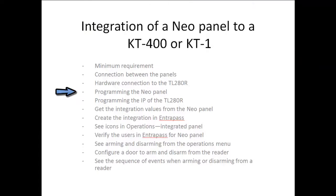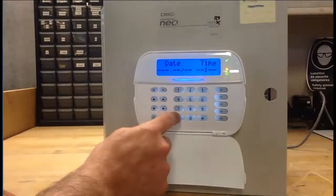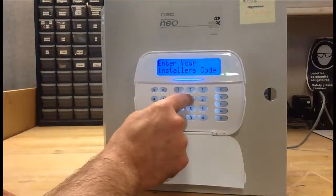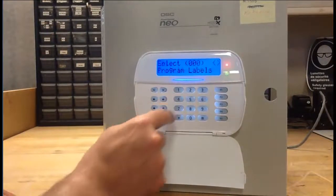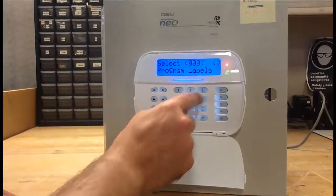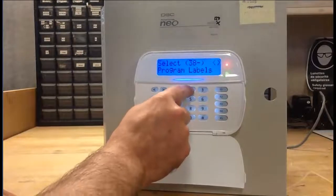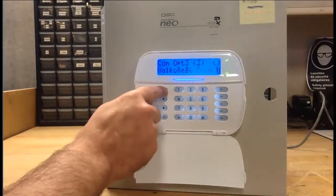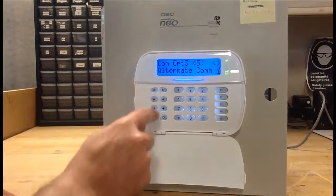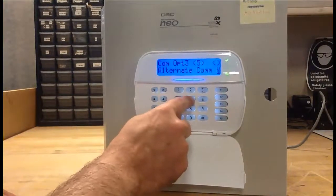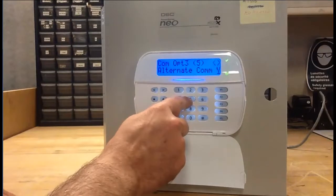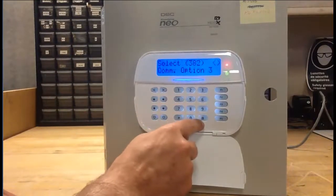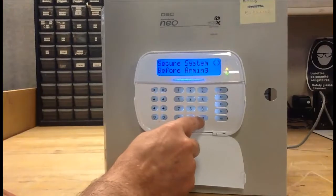Now let's take a look at programming the NeoPanel. First step is we're going to click star 8 and then 5555, our installer code, and then we're going to go to subsection 382. We will select option 5, alternate communications. If we press 5, you can see that we can toggle between yes and no. We'll want to make sure that yes is selected.